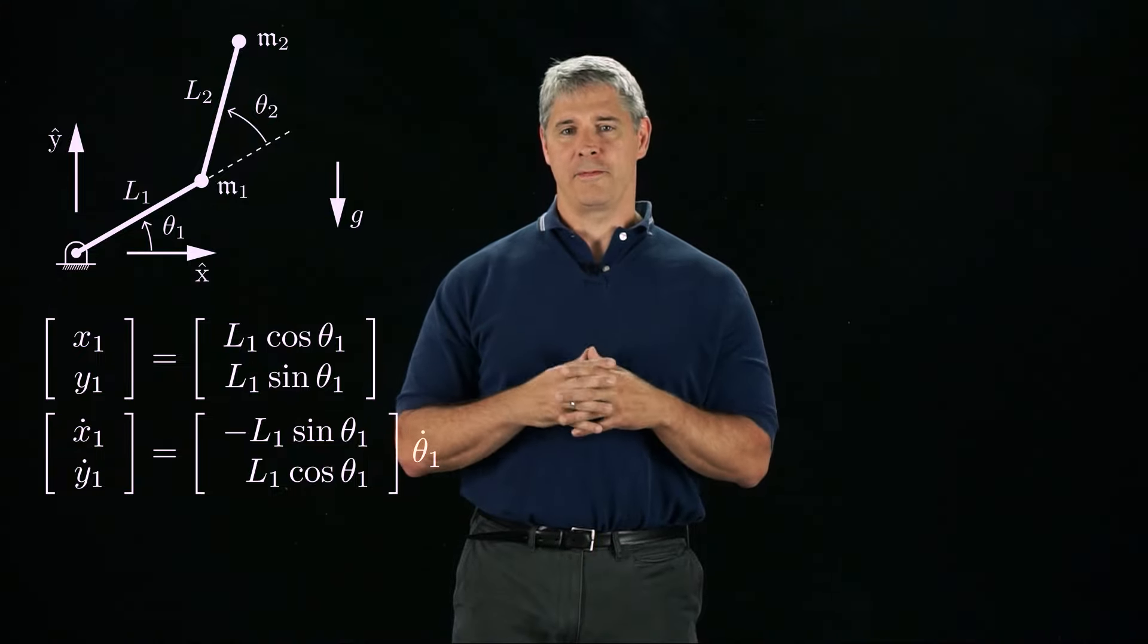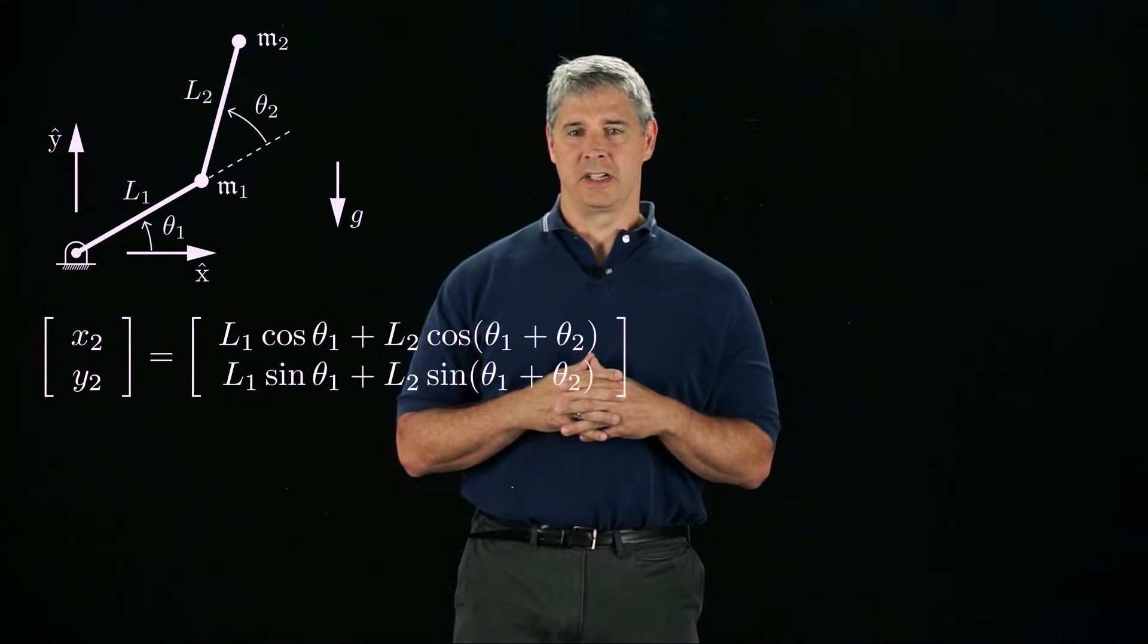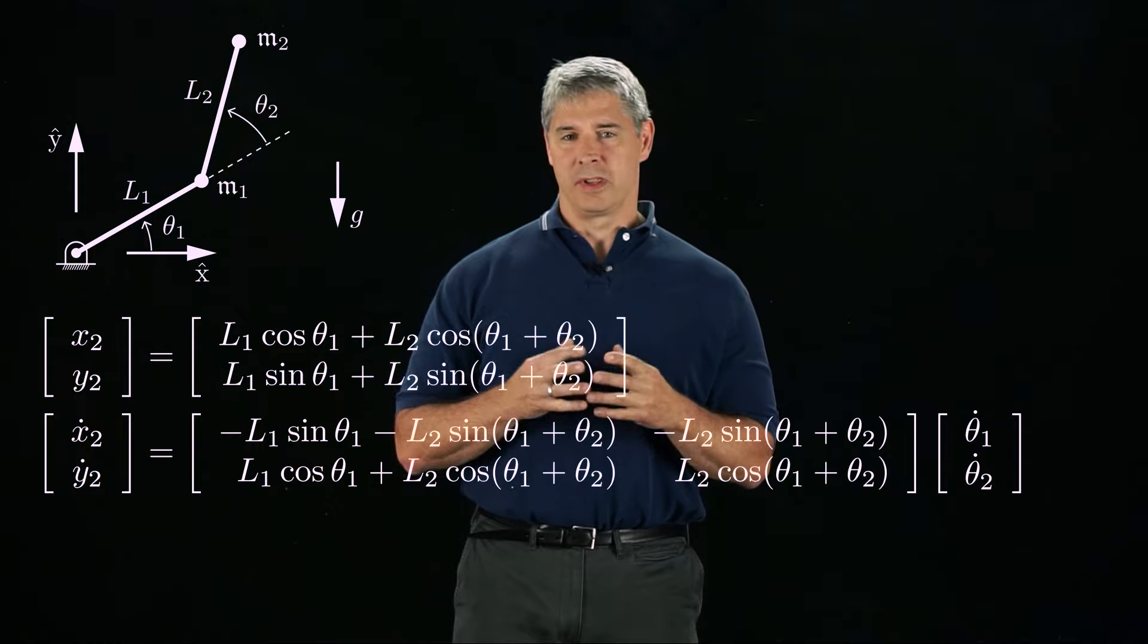We need to calculate the kinetic and potential energy of the two point masses, so first we calculate the position of mass 1, given by the coordinates x₁ and y₁. We can take the derivative to get the velocity of M₁. We can do the same for mass 2, deriving its position and velocity.